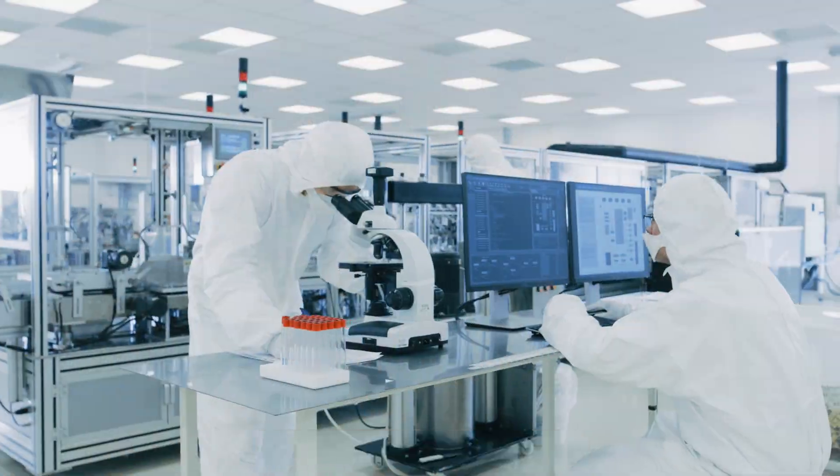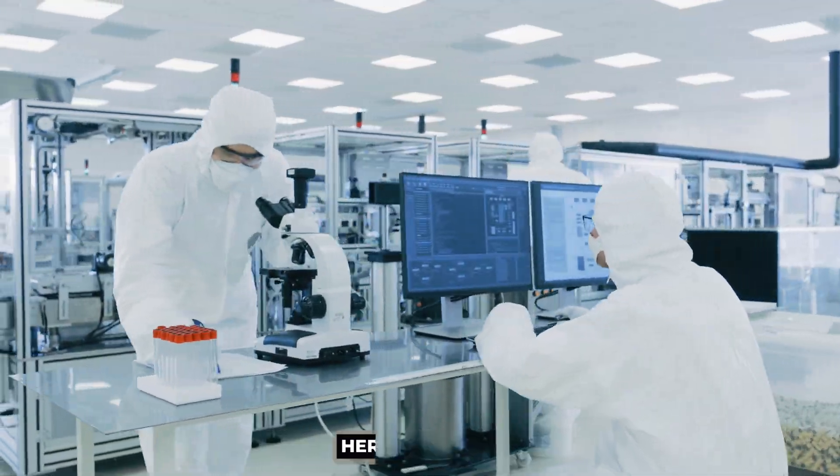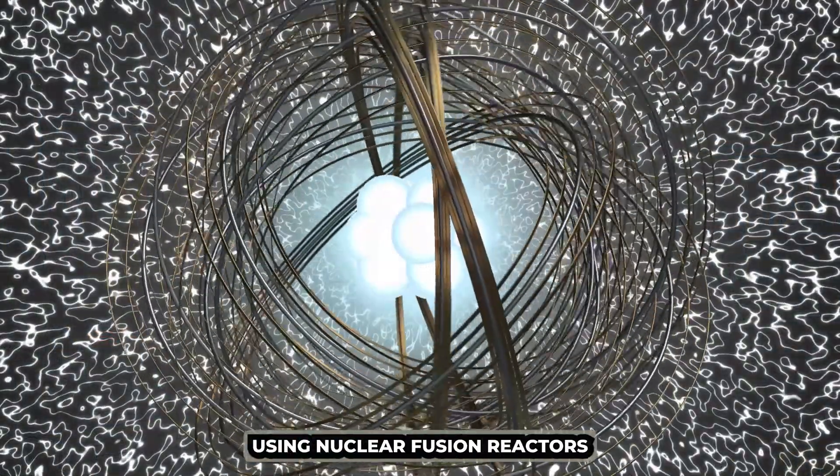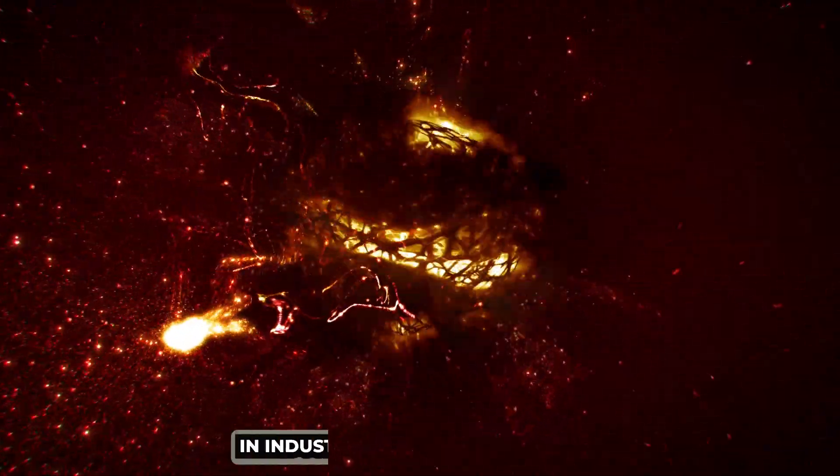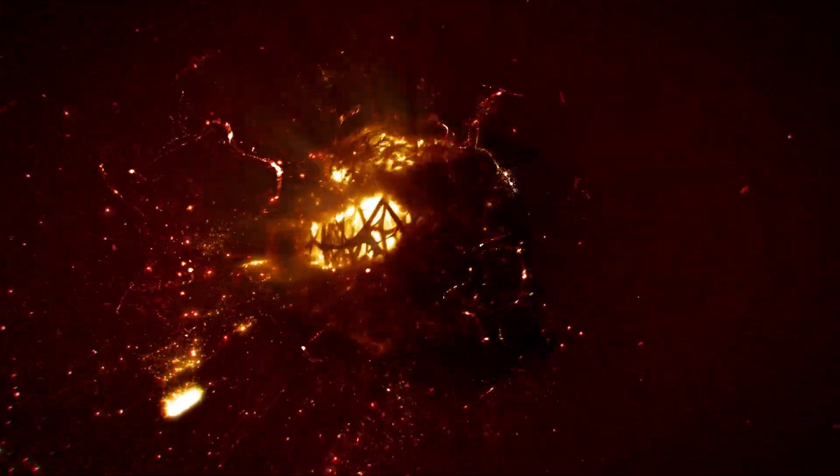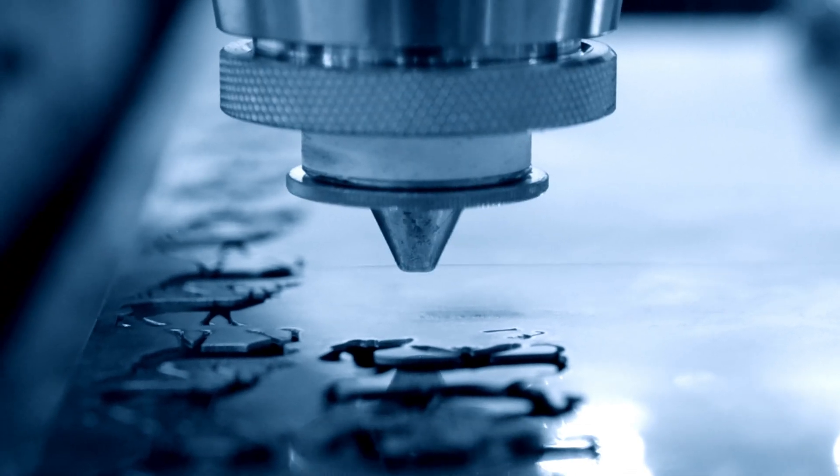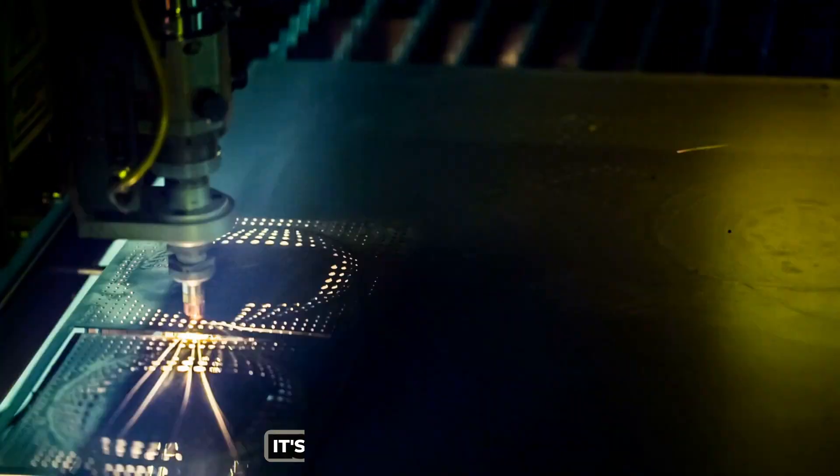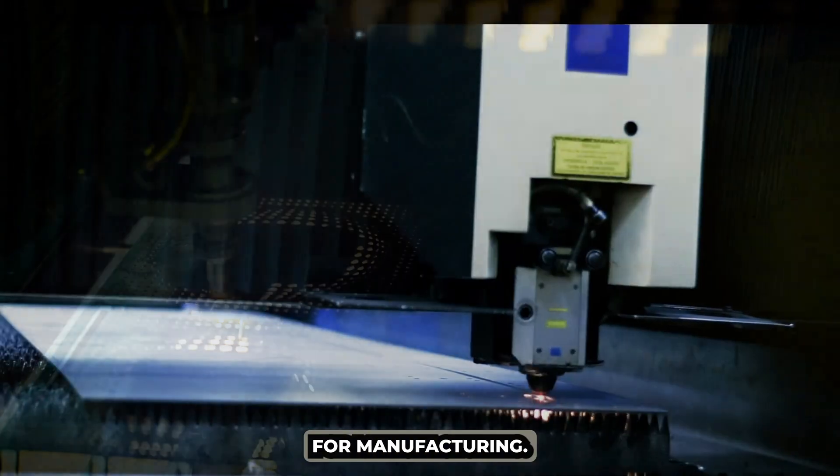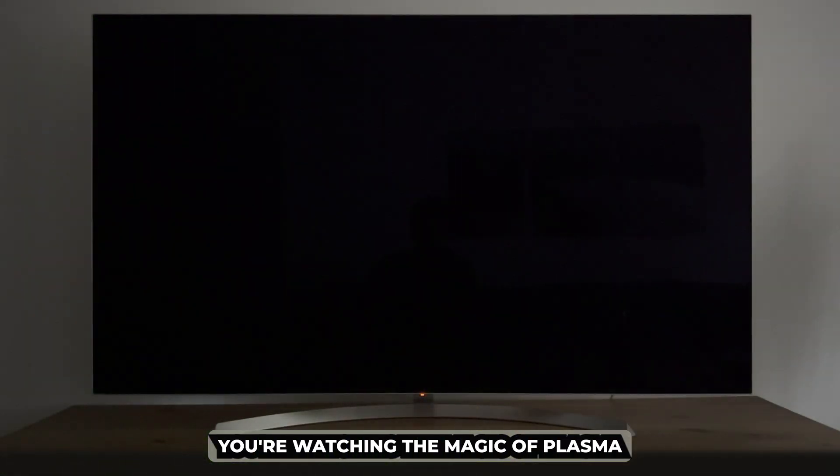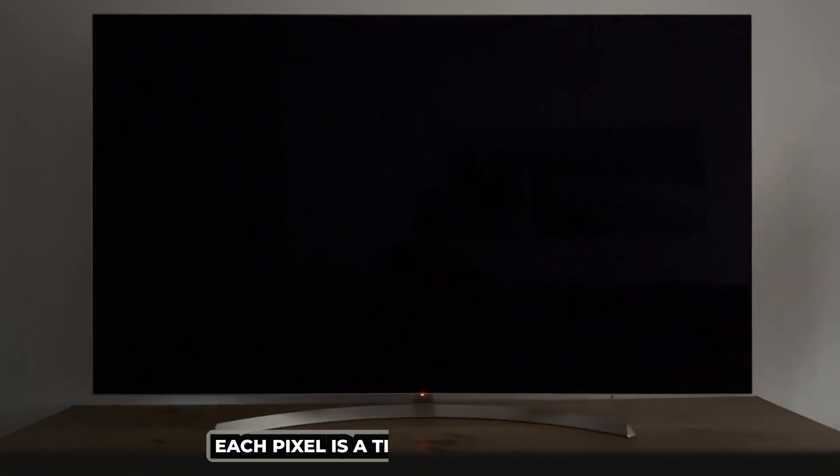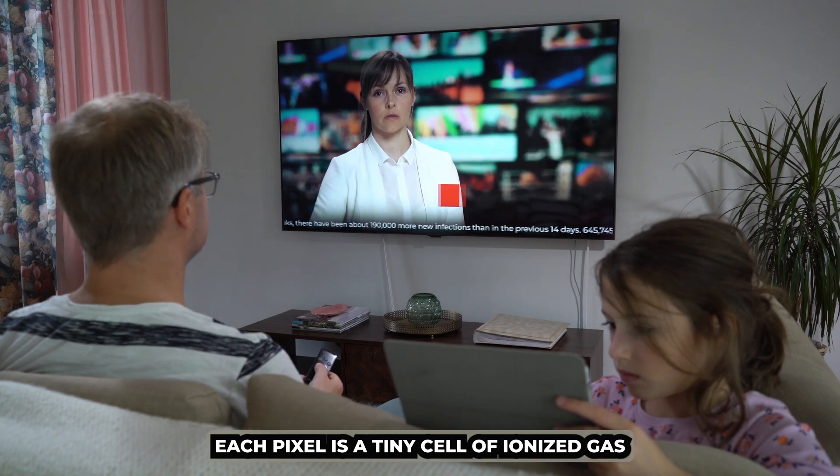Scientists are working hard to recreate the power of the sun here on Earth, using nuclear fusion reactors that confine plasma at extreme temperatures. In industry, plasma is used to cut, weld, etch and coat materials with incredible precision. It's like a high-tech scalpel for manufacturing. And if you have a plasma screen at home, you're watching the magic of plasma in action. Each pixel is a tiny cell of ionized gas that emits light.